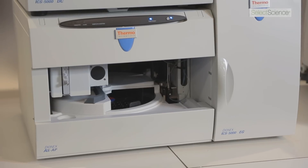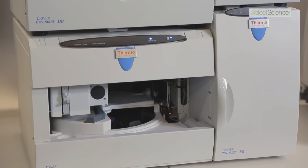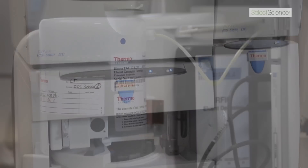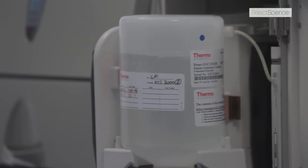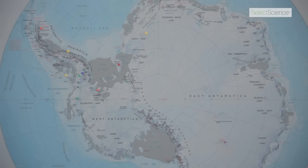I measure the major anions in my chemical sample using a fast ion chromatograph. We're particularly interested to see how the last 50 years of anthropogenic warming fits into a bigger picture, and whether the recent warming is significant over a longer time scale and whether it's significant in terms of a spatial scale as well.